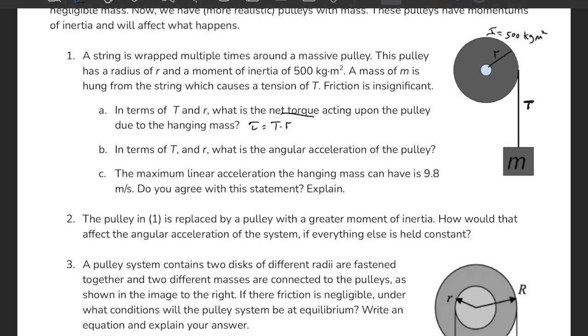In terms of T and r, what is the angular acceleration of the pulley? Well, torque over rotational inertia is angular acceleration because we know τ is I alpha, so we're going to say T over r divided by 500 is equal to alpha. They told us I was 500.